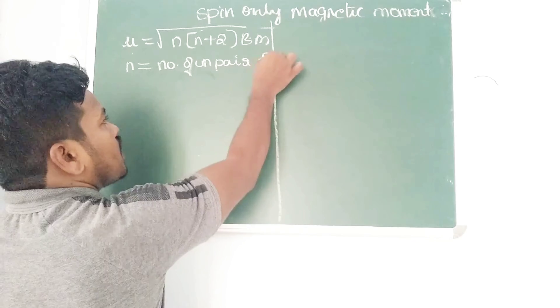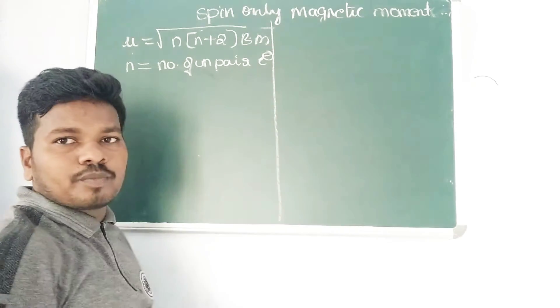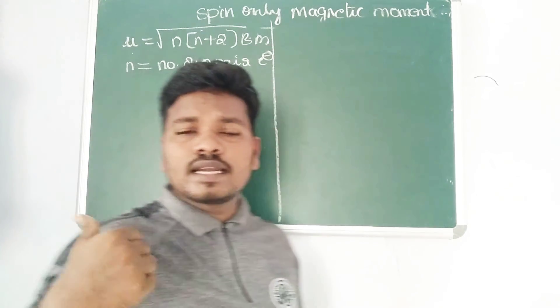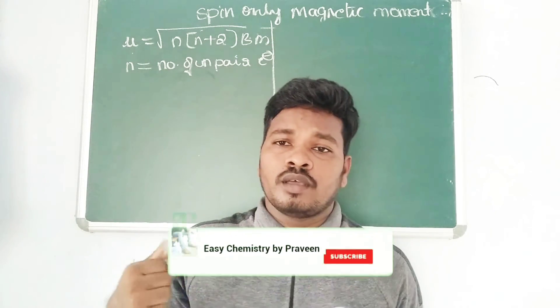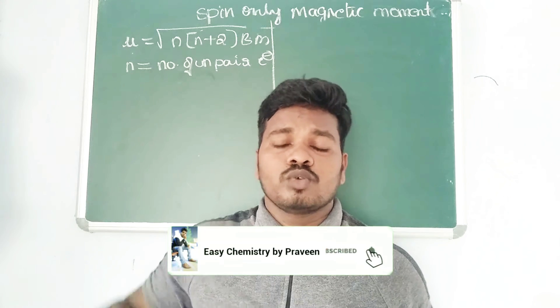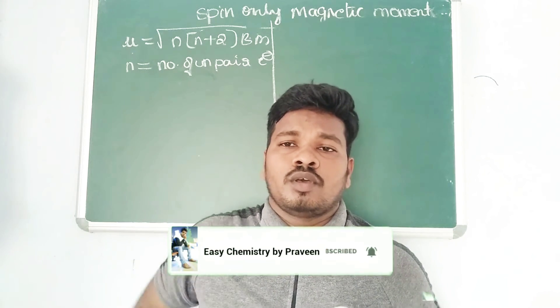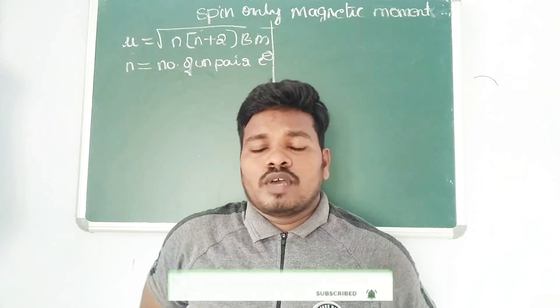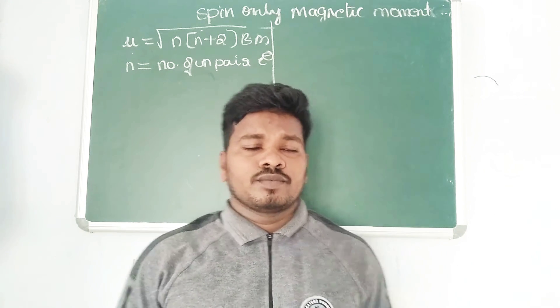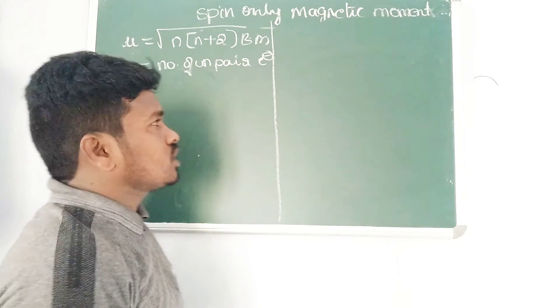First we have to calculate the n value — the number of unpaired electrons. Once we calculate the n value, we substitute it into this formula and we will get the Bohr magneton value.